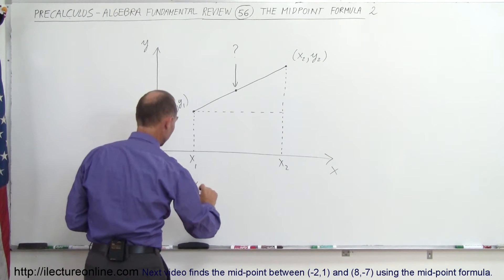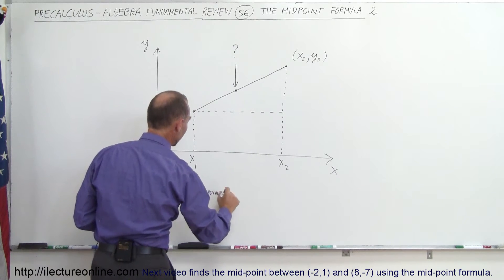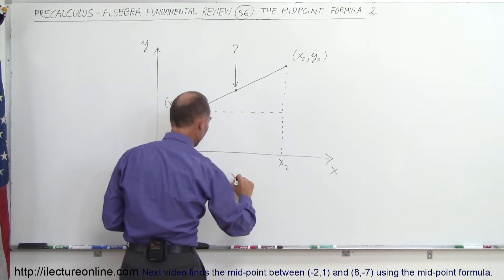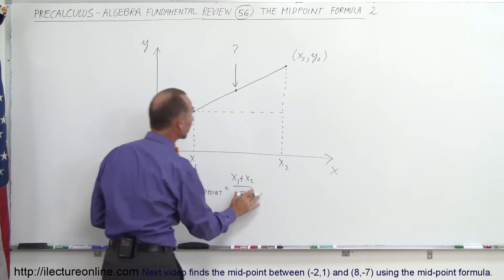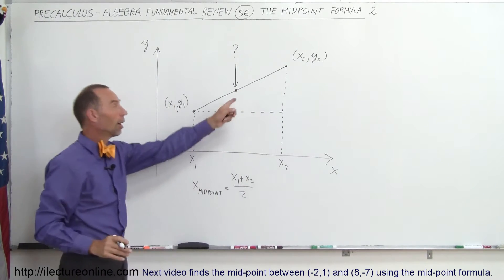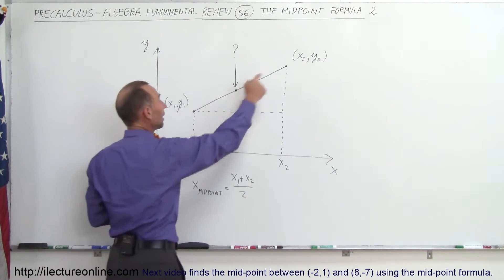Well, X in the middle, so the midpoint, X midpoint, is equal to the sum of those two, which is X1 plus X2 divided by 2. And that would then become the X coordinate of that point right there, which would be the point in the middle between this point and that one.